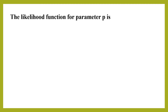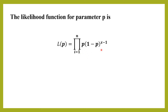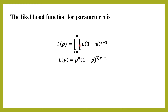For the likelihood function, we introduce the pi (product) operator. The likelihood function is the product from i=1 to n of p · (1−p)^(x−1). Since p is a constant across the product, it becomes p raised to the power n.